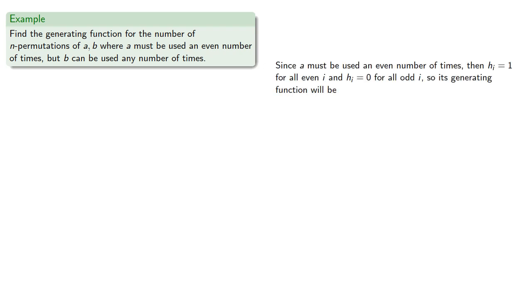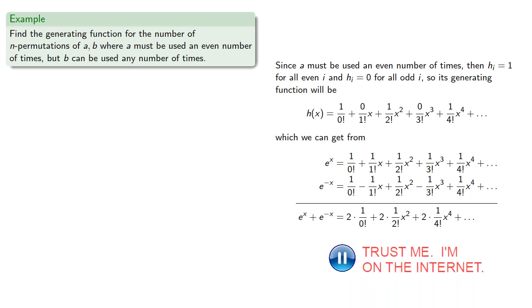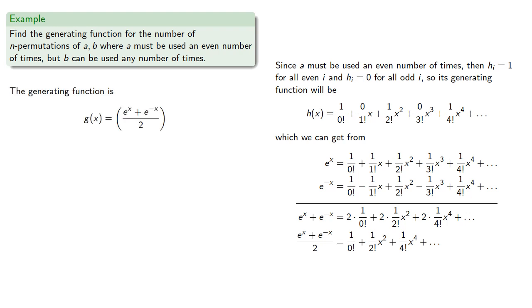Since a must be used an even number of times, then h_i equals 1 for all even i and 0 for all odd i. So its generating function will be, which we can get by starting with the power series for e to the x, the power series for e to the minus x, and if we add these two series together, all of the odd degree terms will cancel, and if we divide everything by 2, we'll get our exponential generating function.